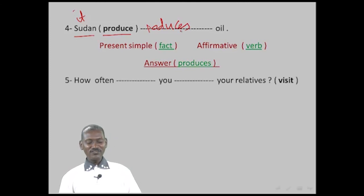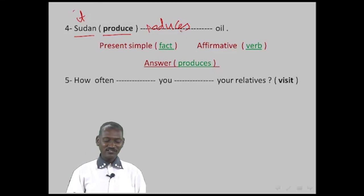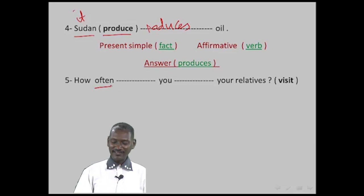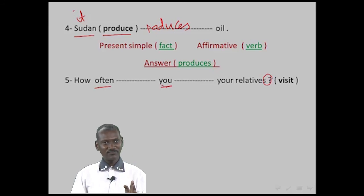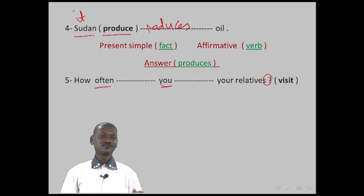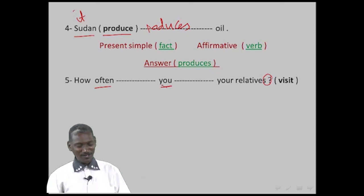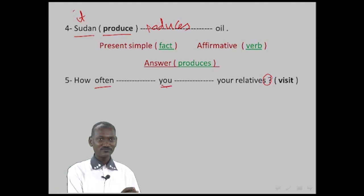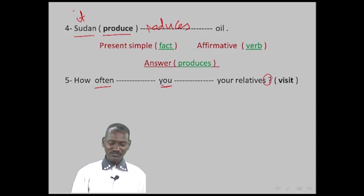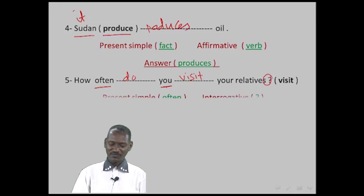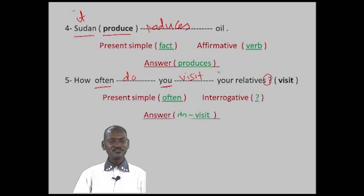Example five: 'How often you visit your relative?' It is Present Simple because of 'often', and interrogative because of the question mark. The subject is 'you', so we put 'do' before the subject. Answer: 'How often do you visit your relative?'